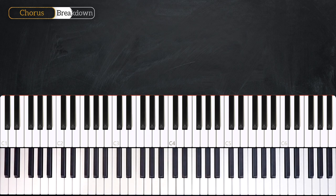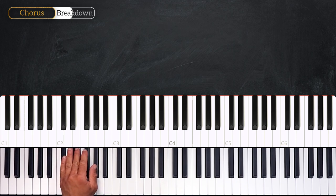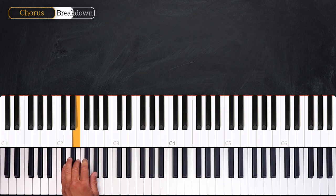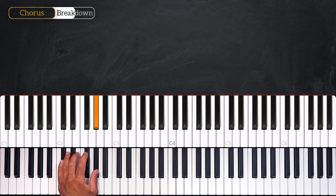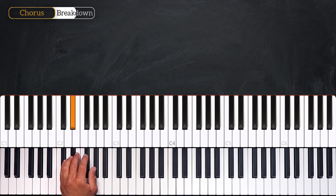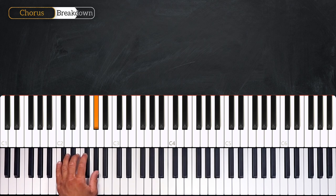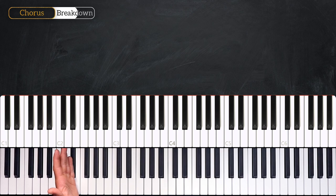Alright, so let's break down what happens. The left hand will play the same thing for the whole section, playing G-sharp, F-sharp, E, D-sharp. Then G-sharp, F-sharp, E, D-sharp, F-sharp, G-sharp. 1-2-3-4.